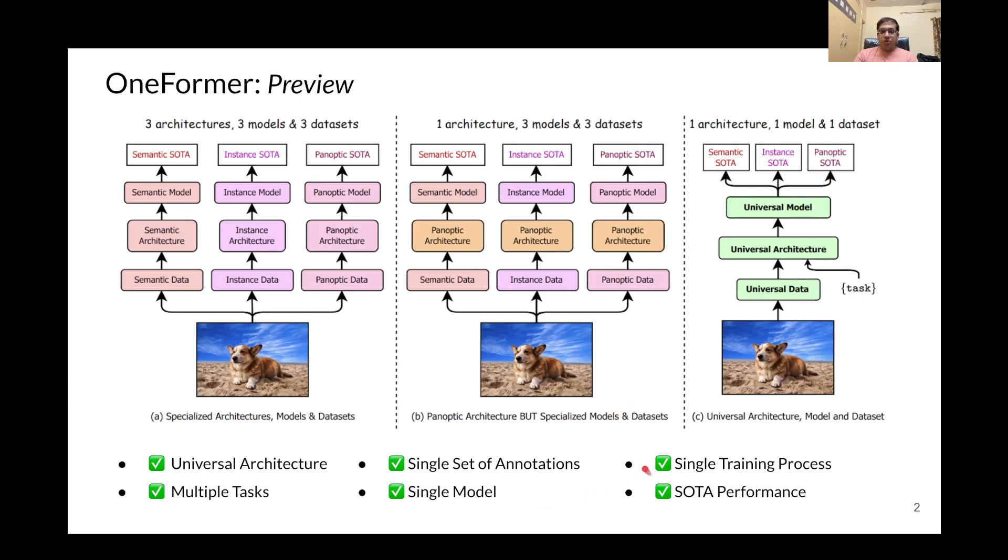With OneFormer, we only need to train our model once jointly on each of the three tasks to achieve the best performance for each of the three tasks.